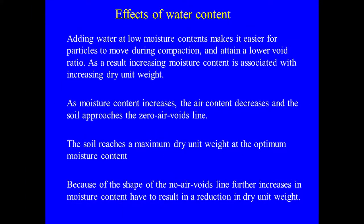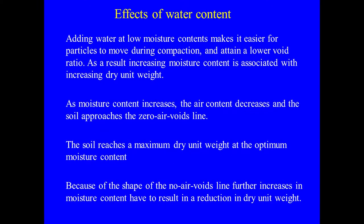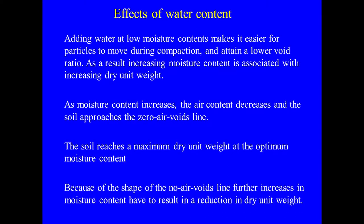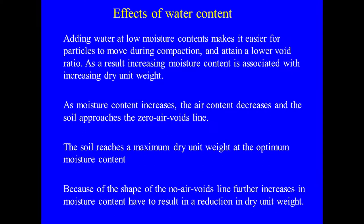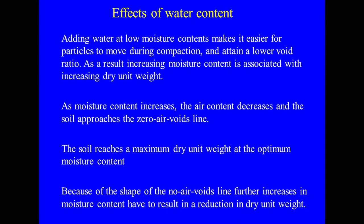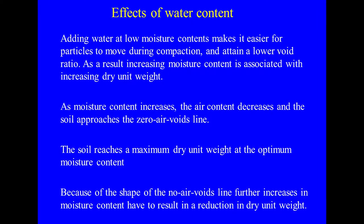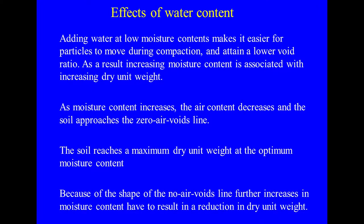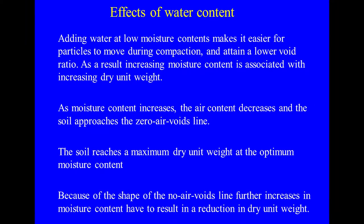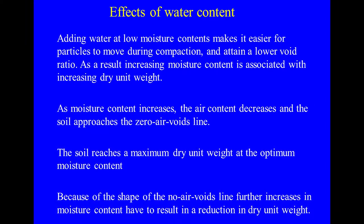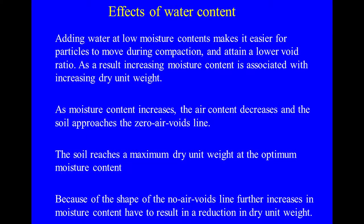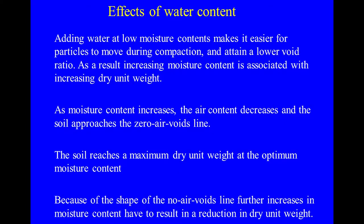Effects of water content: adding water at low moisture content makes it easier for particles to move during compaction, attaining a lower void ratio. As a result, increasing moisture content is associated with increasing dry unit weight. As moisture content increases, the air content decreases and the soil approaches the zero air voids line. The soil reaches a maximum dry unit weight at the optimum moisture content, after which further increase in moisture content results in a reduction in dry unit weight.